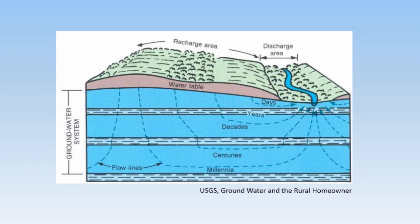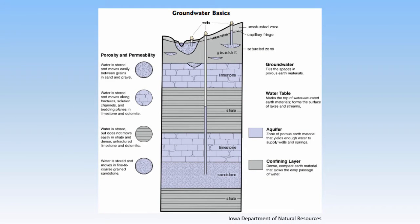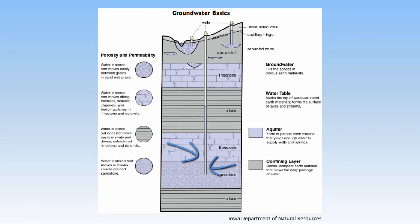Most wells, whether they're used by community water systems, industries, or private well owners, draw their water from an aquifer. An aquifer is a geologic unit, usually either sand and gravel or cracked and creviced bedrock, that can provide usable quantities of water to a well. That means the aquifer has to be porous enough to hold enough water for a well to pump, and the water has to be able to flow through the aquifer easily enough to supply the well as it is pumped. This is permeability.